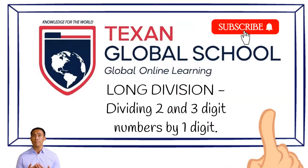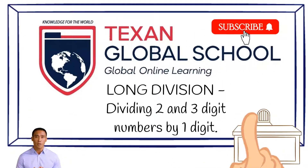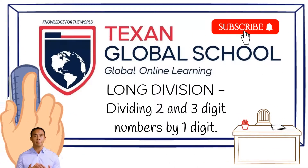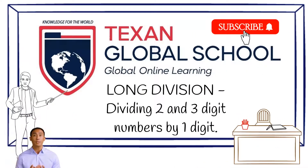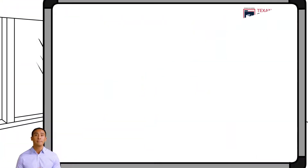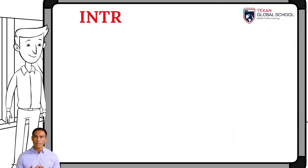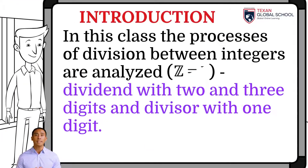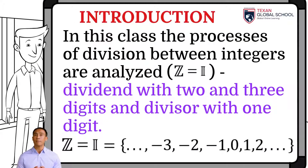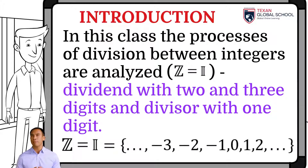Texan Global School. Long Division: Dividing 2 and 3 digits by 1 digit. This class analyzes processes to perform division between integers, with 2 and 3 digit dividends, and a 1 digit divisor.